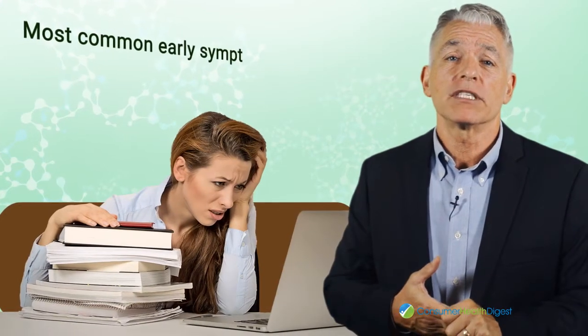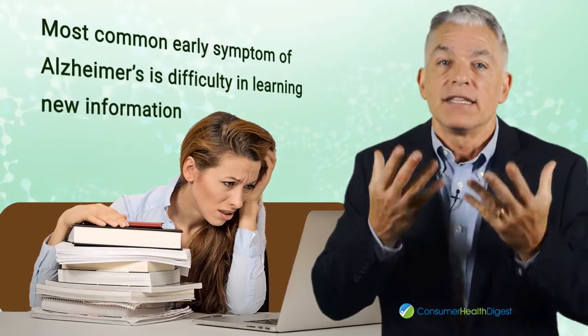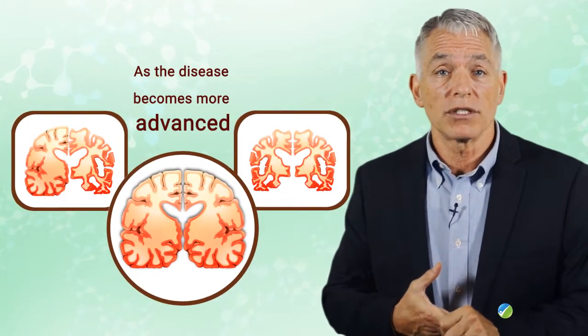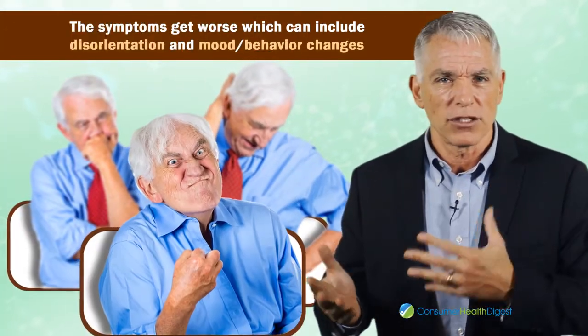The most common early symptom of Alzheimer's disease is difficulty in learning new information. This is because the disease alters the area of the brain that affects learning. As the disease becomes more advanced, the symptoms get worse, which can also include disorientation and mood or behavior changes.